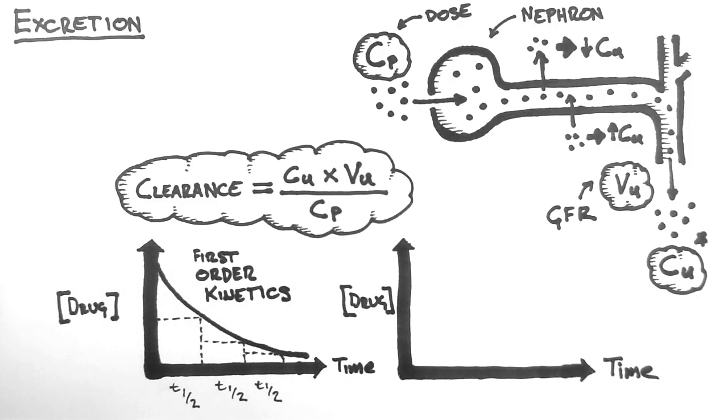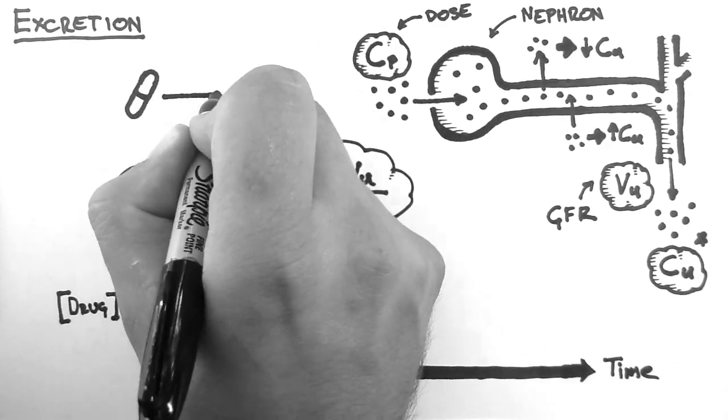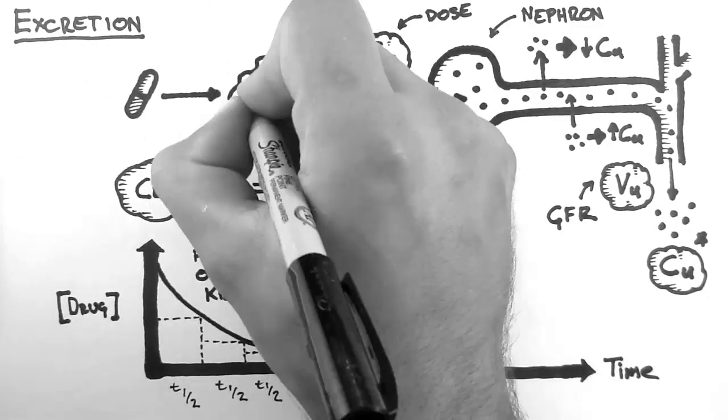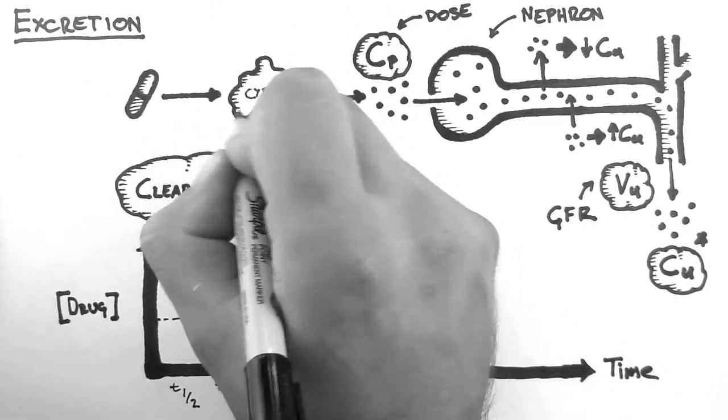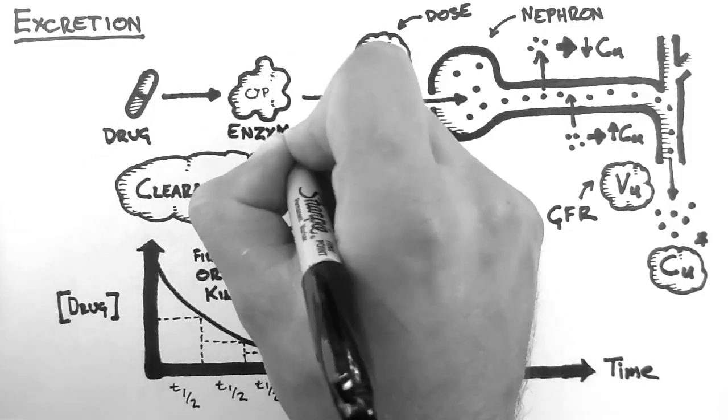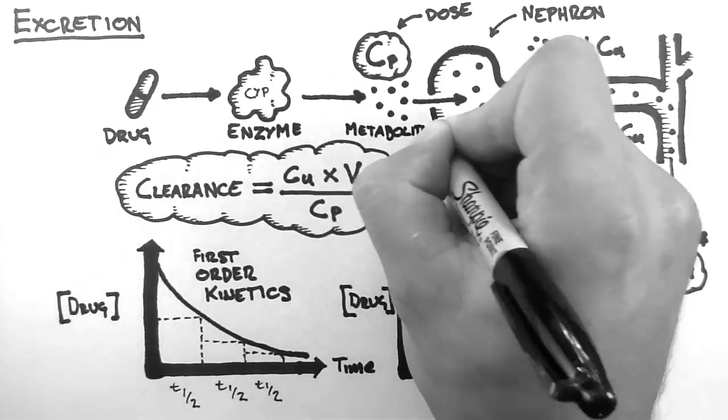Now let's change the situation a little. As we saw in the previous tutorial, drugs often have to be metabolized by an enzyme prior to excretion. The system would then look like this. A drug gets metabolized by an enzyme and then the metabolite gets excreted.